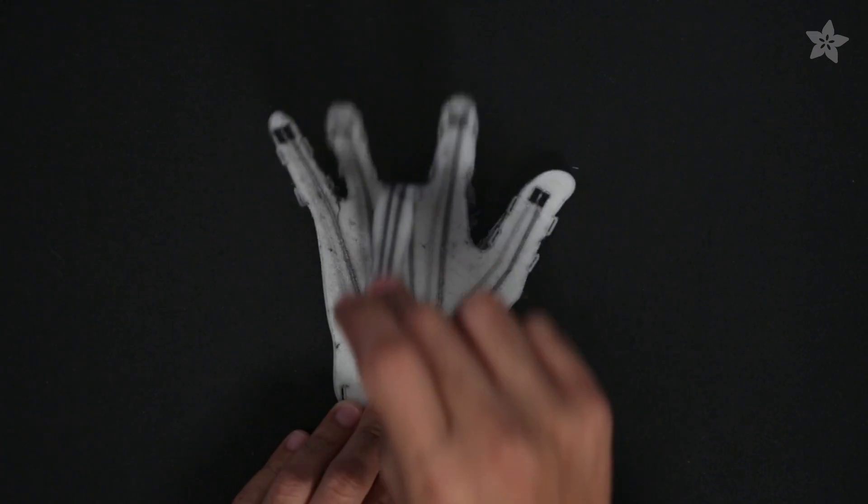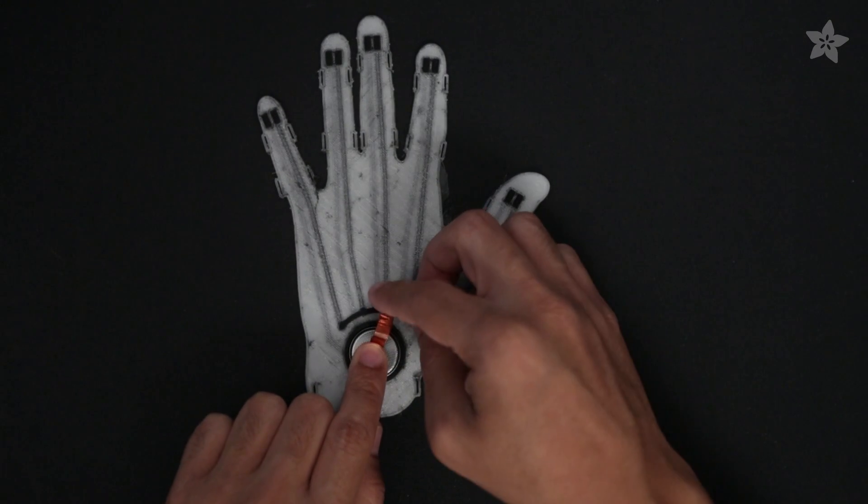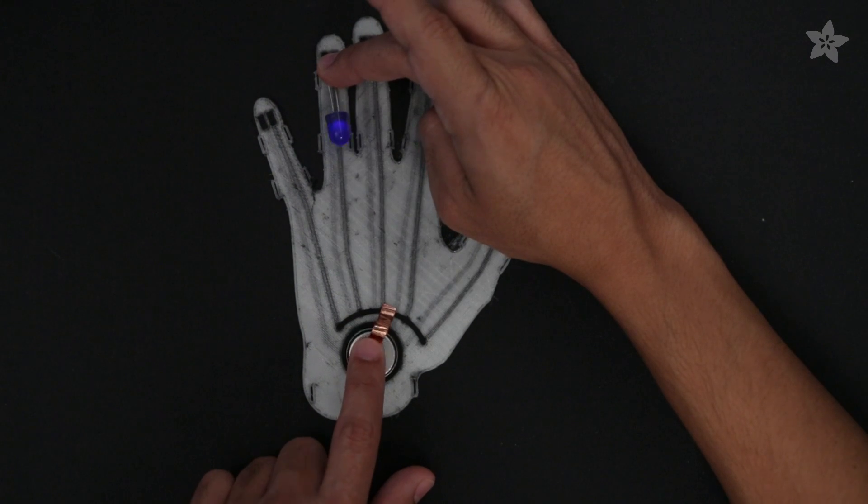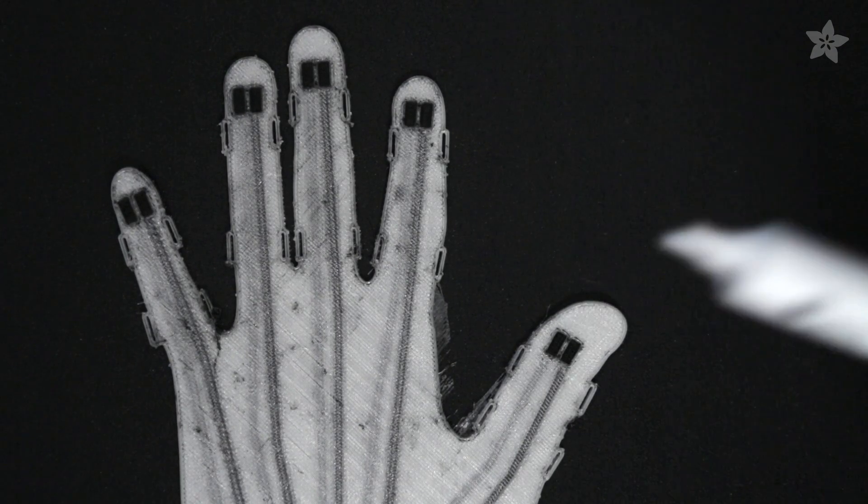The coin cell fits into the battery holder with the positive side down. To ensure our traces are working, we can test each finger using an LED. We can connect the battery's ground by bridging the top of the traces with a piece of copper tape.